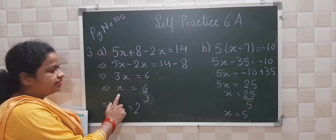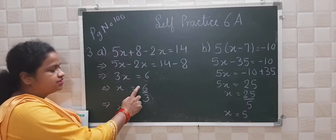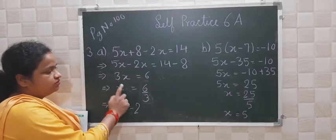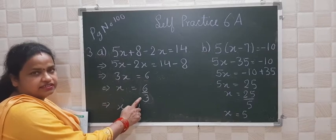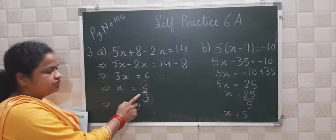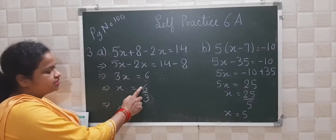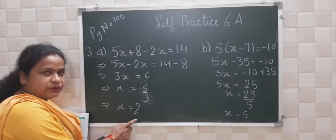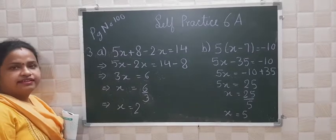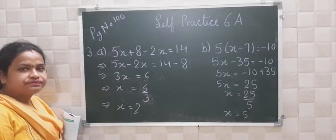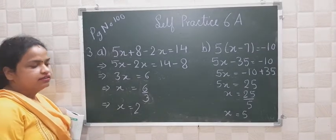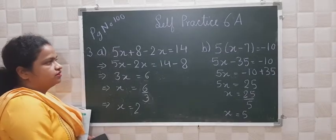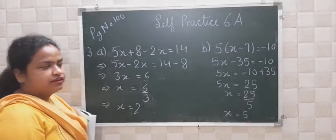So what will be the value of x? x is equal to 6 by 3. The 3 came here — it will be division, because here it is multiplication so here it will be division. So 6 by 3 gives x equal to 2. Is there any confusion? The value of x is 2. Is it clear?